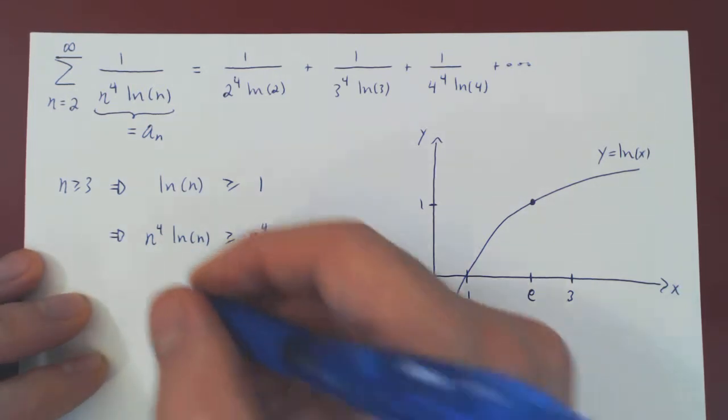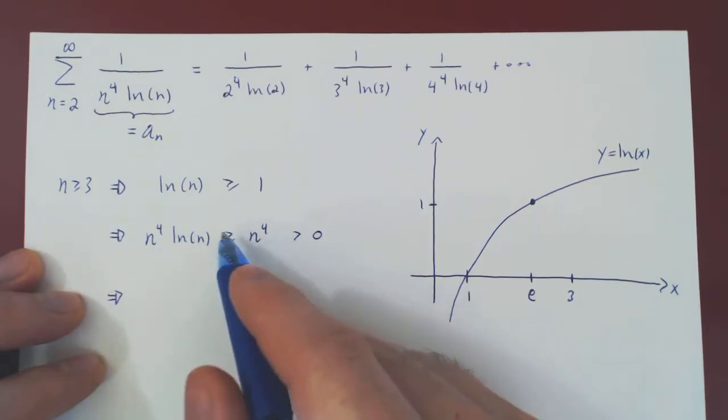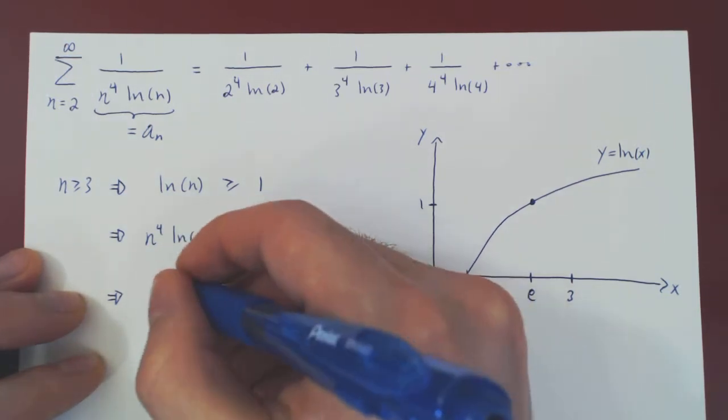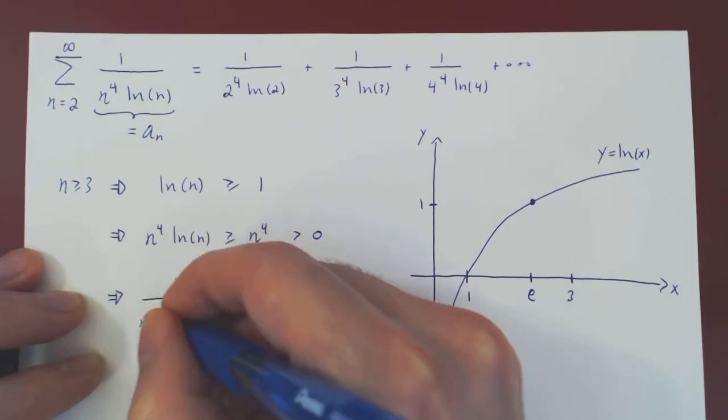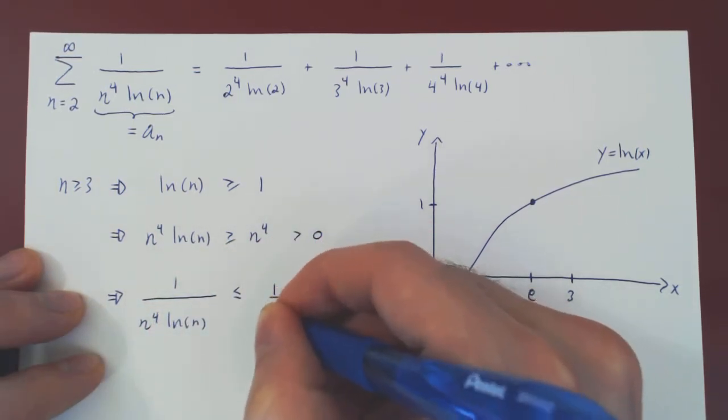Well, let's now invert both expressions. If we invert both sides, of course, we reverse the inequality. And so 1 over n to the 4, ln of n will be smaller than 1 over n to the 4.